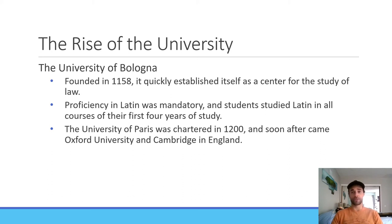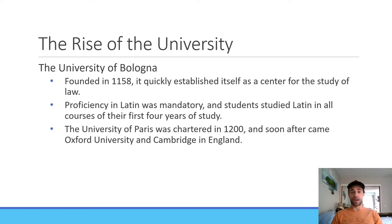In the 12th century, we see the rise of the university. Schools of thought were most popularly created in ancient Greece with Plato's Academy and Aristotle's Lyceum, but it's in this 12th century — within Italy, France, and England — that we see the development and popularity of centers of learning that become the modern-day university. We see this with the University of Bologna, the University of Paris, and Oxford and Cambridge in England.